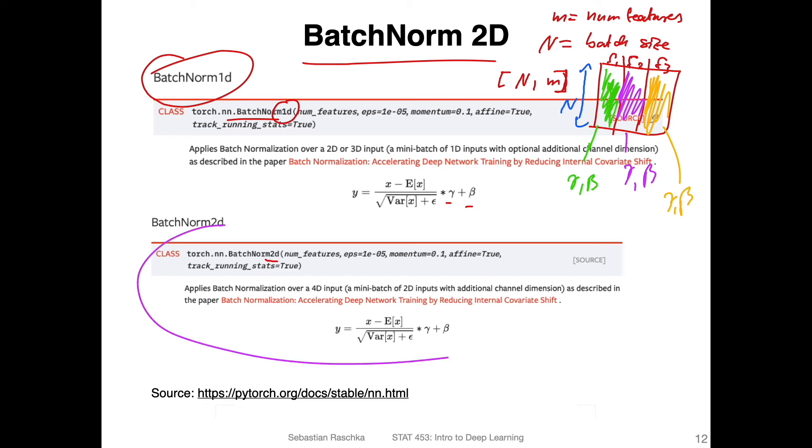Now we extend this concept here to the two-dimensional case where we compute these for inputs that are four-dimensional, right? Because we have now the batch size, we have the channels, we have the height, and we have the width.